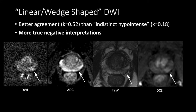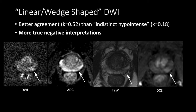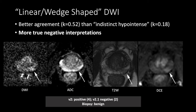Here is an example. We have the high B-value diffusion-weighted image, ADC, T2-weighted image, and dynamic post-contrast image. Four of our readers called this mild to moderately restricting in version 2 and upgraded it to a score of 4 based on its positive DCE — calling this lesion positive in version 2. All four of these readers then called this a linear or wedge-shaped diffusion abnormality in version 2.1, resulting in a score of 2, or negative. This was biopsied and came back as benign prostatic tissue.